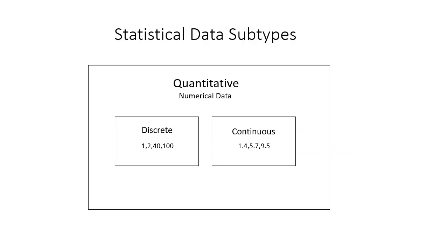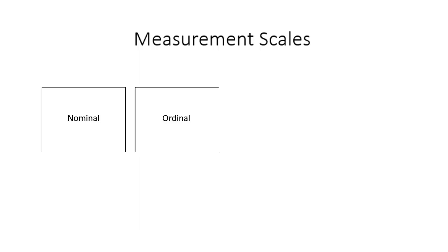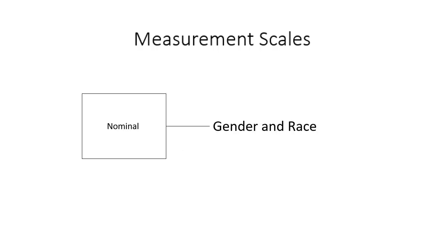Let's tackle some data measurement scales. A measurement scale indicates the type of mathematical operations that can be performed on the data and is most commonly used when describing properties of variables. In statistics there are four core measurement scales: nominal, ordinal, interval, and ratio. The simplest is nominal — used for labeling variables without any quantitative value. Nominal scales can simply be called labels. A good way to remember this is that nominal sounds like name, and nominal scales are like names or labels.